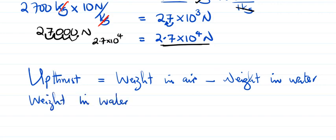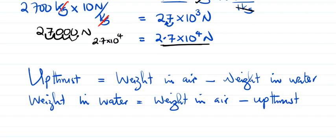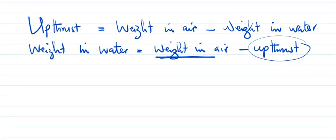Weight in seawater equals weight in air minus thrust force. We need to find our thrust force. To do that, we use the volume of the object. When an object is fully immersed in a liquid, the volume of water displaced equals the volume of that object, and we use that displaced volume to find our thrust force.